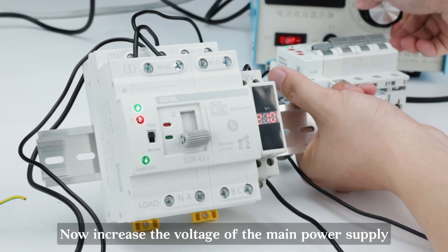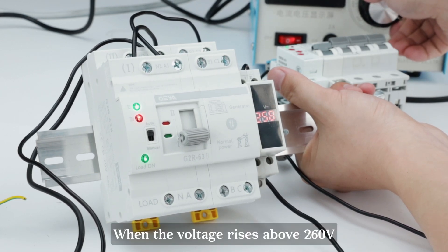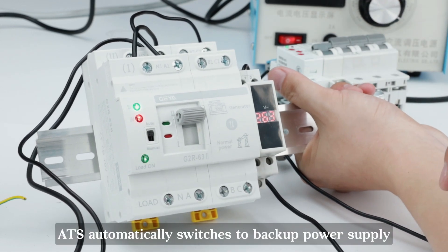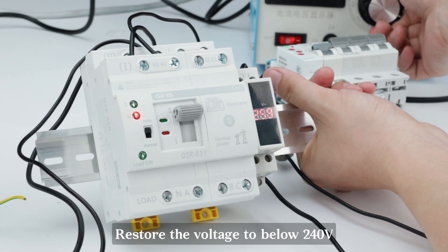Now increase the voltage of the main power supply. When the voltage rises above 260V, ATS automatically switches to backup power supply. Restore the voltage to below 240V.